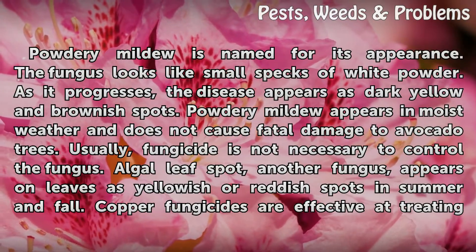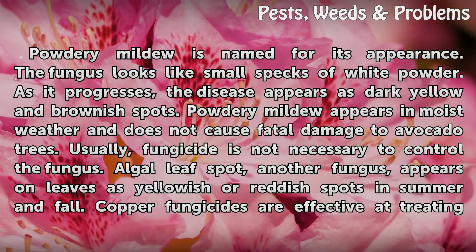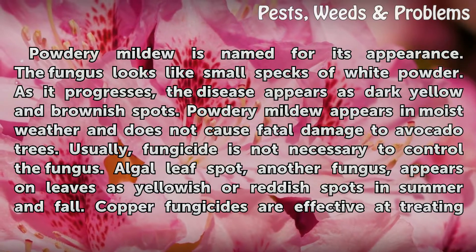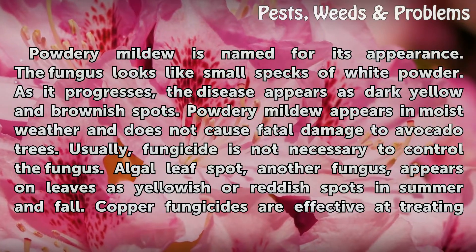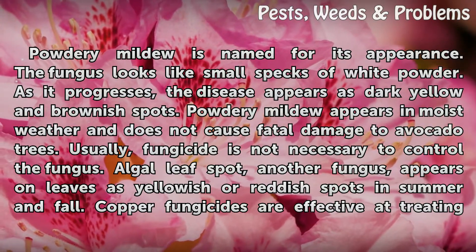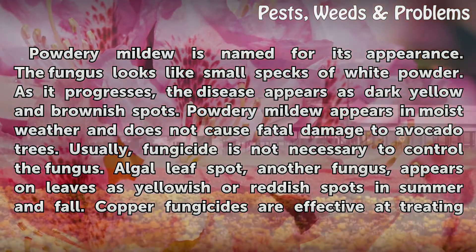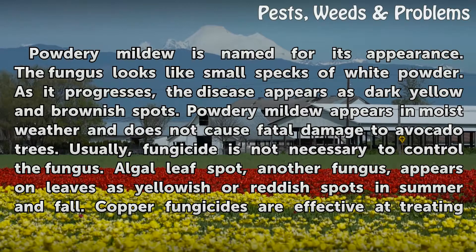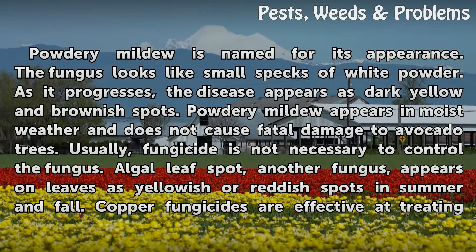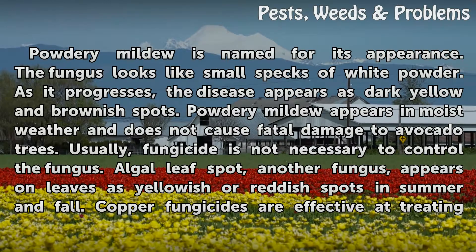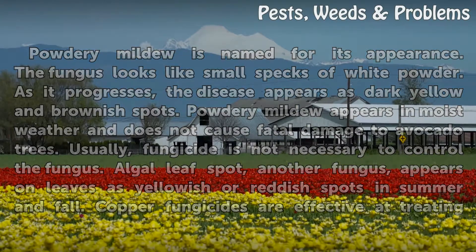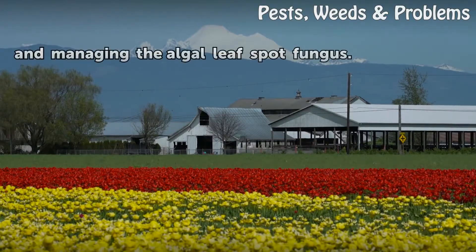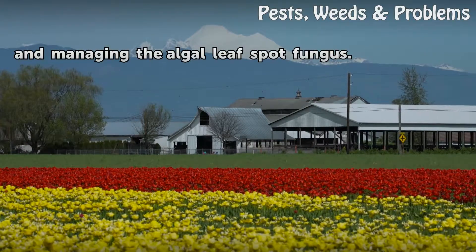Powdery mildew is named for its appearance. The fungus looks like small specks of white powder. As it progresses, the disease appears as dark yellow and brownish spots. Powdery mildew appears in moist weather and does not cause fatal damage to avocado trees. Usually, fungicide is not necessary to control the fungus. Algal leaf spot, another fungus, appears on leaves as yellowish or reddish spots in summer and fall. Copper fungicides are effective at treating and managing the algal leaf spot fungus.